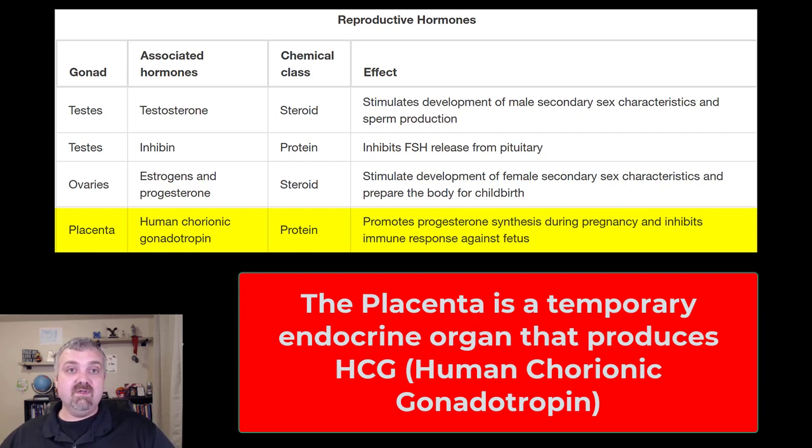The other important function of human chorionic gonadotropin is that it does play a role in suppressing mom's immune function. So if you think about it, being pregnant is an immunosuppressive disorder. The reason that's important is because the baby's only half you. So if your immune system is firing on all eight cylinders, then it will recognize the baby as abnormal. So your immune system is suppressed while you're pregnant. This is why lots of women that have autoimmune diseases see an improvement in their symptoms while they're pregnant. So the placenta produces this important hormone, human chorionic gonadotropin.